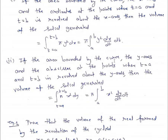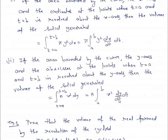Similarly, if the area bounded by the curve, the y-axis, and the abscissas at the points where t = a and t = b is revolved about the y-axis, then the volume of the solid generated is given by π∫x² dy from t = a to b, which can be written as: V = π∫[a to b] x² (dy/dt) dt.